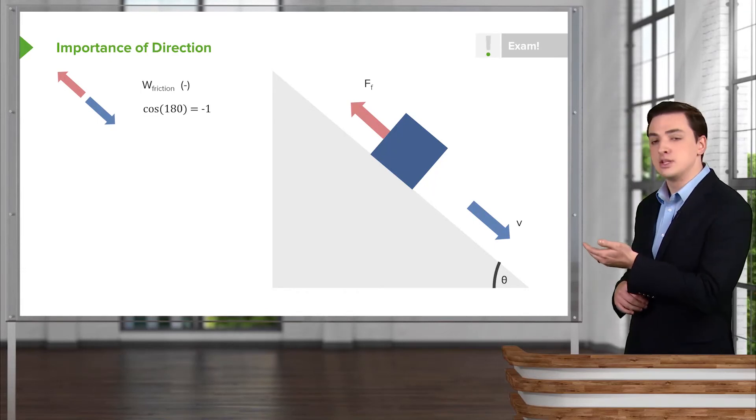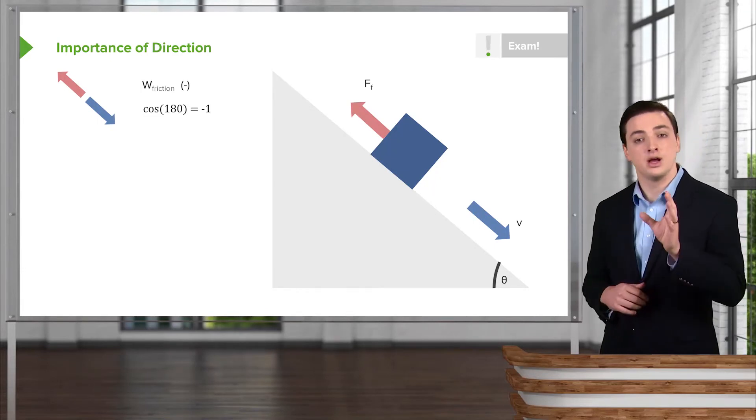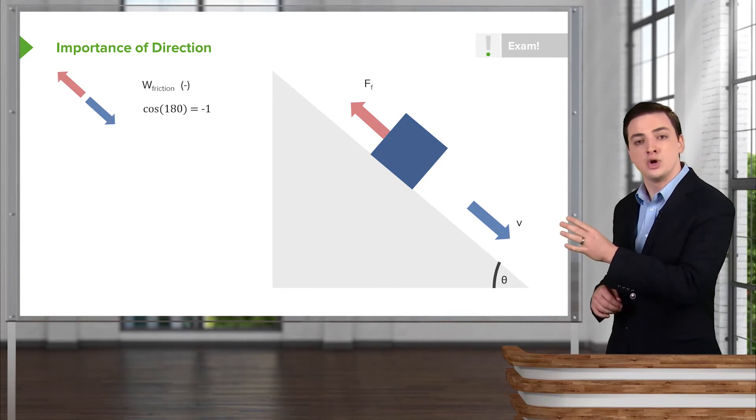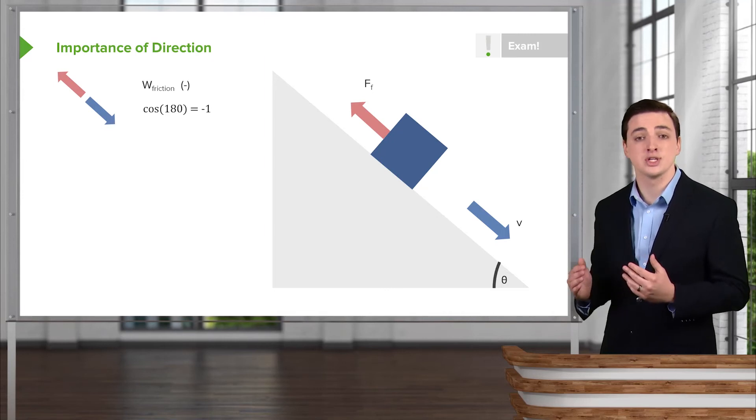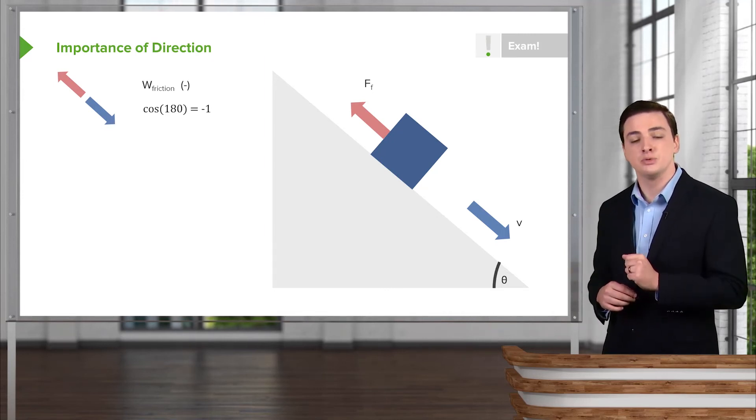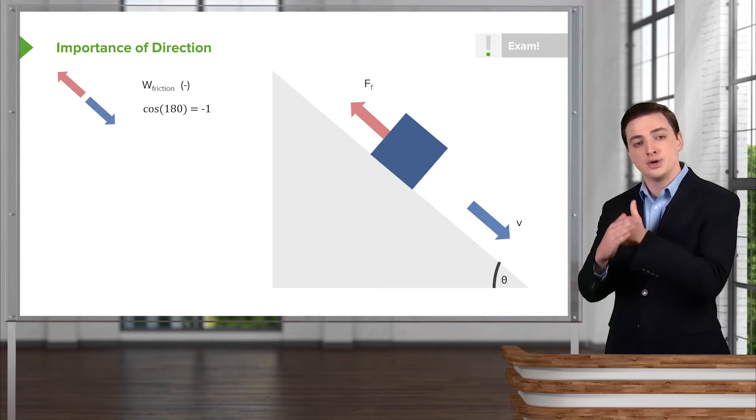One kind of force might be the force up the slope fighting the motion of the object down the slope. In this case we have friction as a good example of something that doesn't want you moving down the slope. So we have a force opposite your direction of motion. If you have a force up the slope while your motion is down the slope, the direction between these two, as you can see in the red and blue arrows here, is 180 degrees.